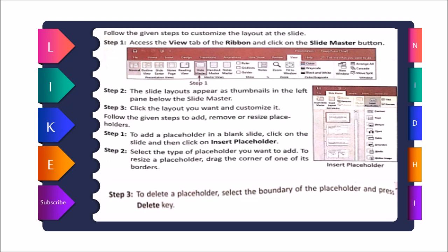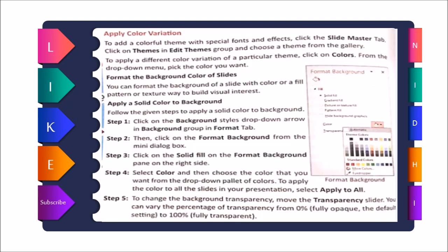Next is how to apply color variations — adding colorful themes with special fonts and effects. Click the Slide Master tab, then click on Themes under Edit Themes. On the right-hand side, Format Background is available to change colors. To apply a different color variation of a theme, click on Colors and pick the color you want from the drop-down menu. In the next class there will be a demonstration; right now we are covering the theory part.